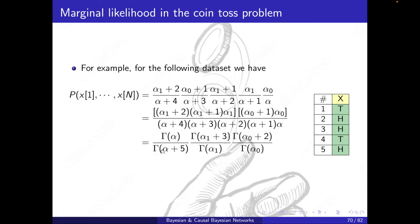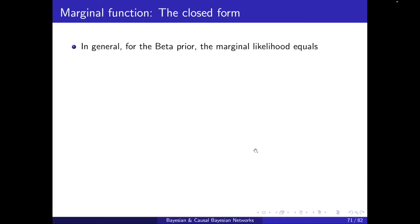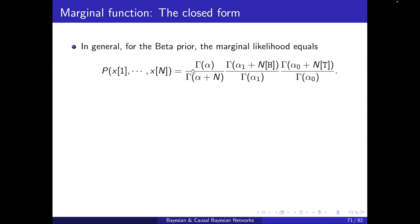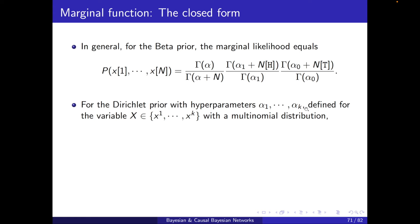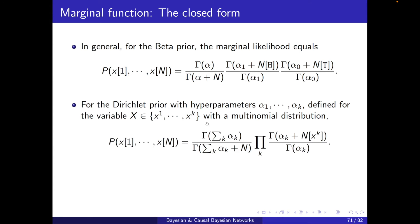The denominator becomes gamma(alpha + 5) divided by gamma(alpha), inverted. More generally, for the beta prior, the marginal likelihood takes this closed form. For a Dirichlet prior with hyperparameters alpha_1 to alpha_k and a multinomial variable, the marginal likelihood is the product over k of gamma(alpha_k + n_k) divided by gamma(alpha_k), normalized by an inverted summation term.